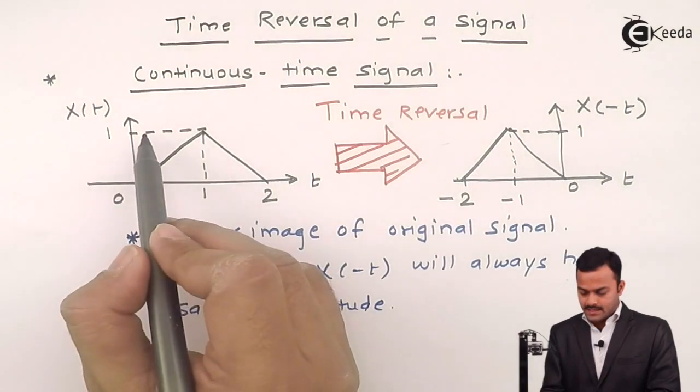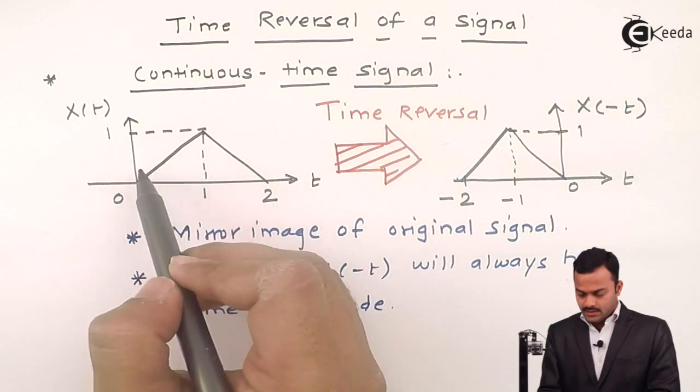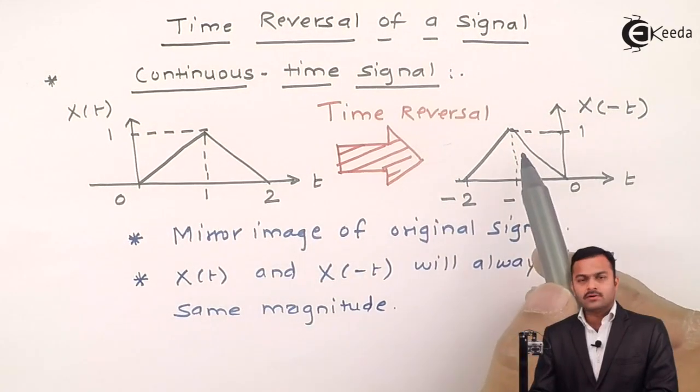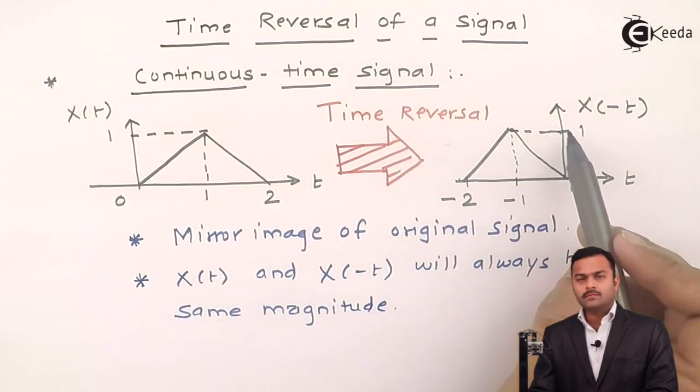Means, in this case of x of t, the signal will have the value 1. In case of x of minus t also, signal will have the value 1.